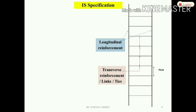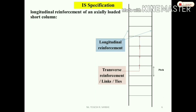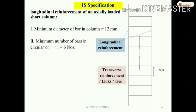Next are the IS 456 specifications for longitudinal reinforcement of an axially loaded short column. The minimum diameter of bar in the column is 12 mm. The minimum number of bars for a rectangular or square column is 4 bars. For a circular column, the minimum number is 6 bars. If the column is circular, at least 6 bars must be provided. The cover of the column is 40 mm.